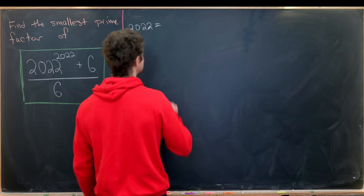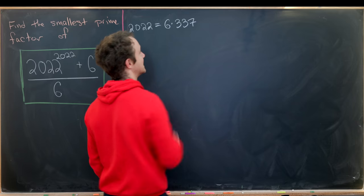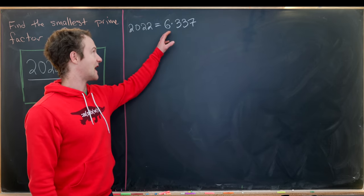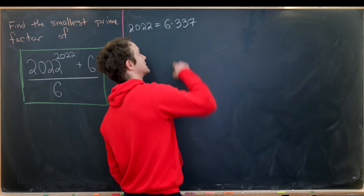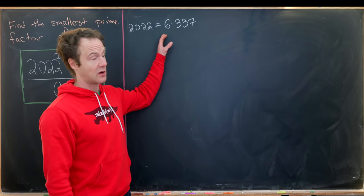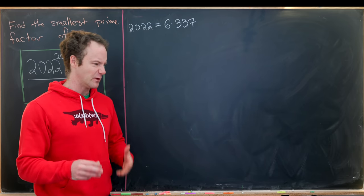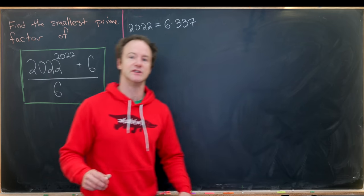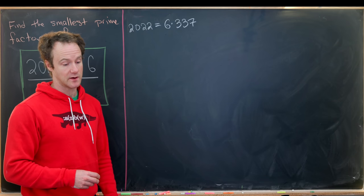So you can check this, this is 6 times 337. So actually, the fact that 2022 factors like this, where it actually has three prime factors, 2 times 3 times 337, and there are two small prime factors and one large prime factor really means that when we get down to playing with number puzzles with the number 2022, it will be much more difficult than it was last year for 2021.